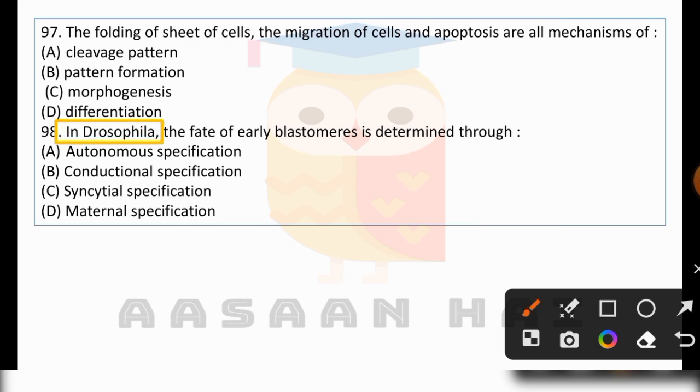Here we have a hint that this is in Drosophila, which is commonly used in developmental studies. While specification commonly occurs through autonomous and conditional mechanisms, in Drosophila specifically, syncytial specification is the type of specification that is seen.